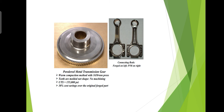Powder metallurgy facilitates manufacture of complex or unique shapes which would be impractical or impossible with other metalworking processes. It allows combination of materials which cannot be produced in any other way, including dissimilar metals, non-metallics, and materials with widely different characteristics. It is suited to moderate to high production volume requirements, offers long-term performance reliability in critical applications, and is cost effective. Limitations include the high cost of metallic powder, high tooling and equipment costs, and dimensional changes that occur during sintering.